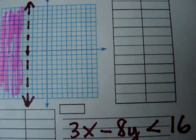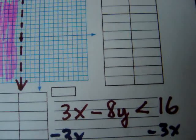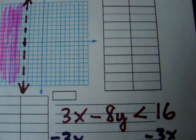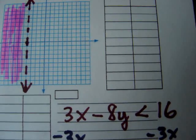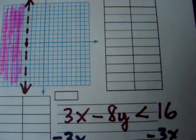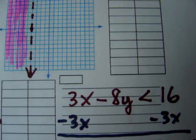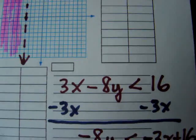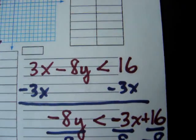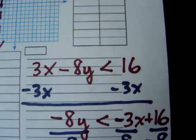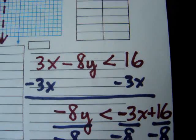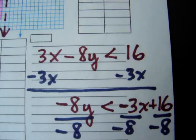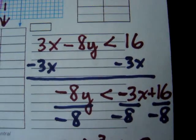Finally, we'll look at 3x minus 8y is less than 16. Again, just pretend that it were an equation and solve for y. In order to get y by itself, we need to get rid of 3x. So, here we go. Subtract 3x on both sides. Now, we're left with negative 8y is less than negative 3x plus 16. How do you get y by itself? Undo multiplying by negative 8. The opposite of multiplying by negative 8 is divide by negative 8. Do that to everything on both sides.